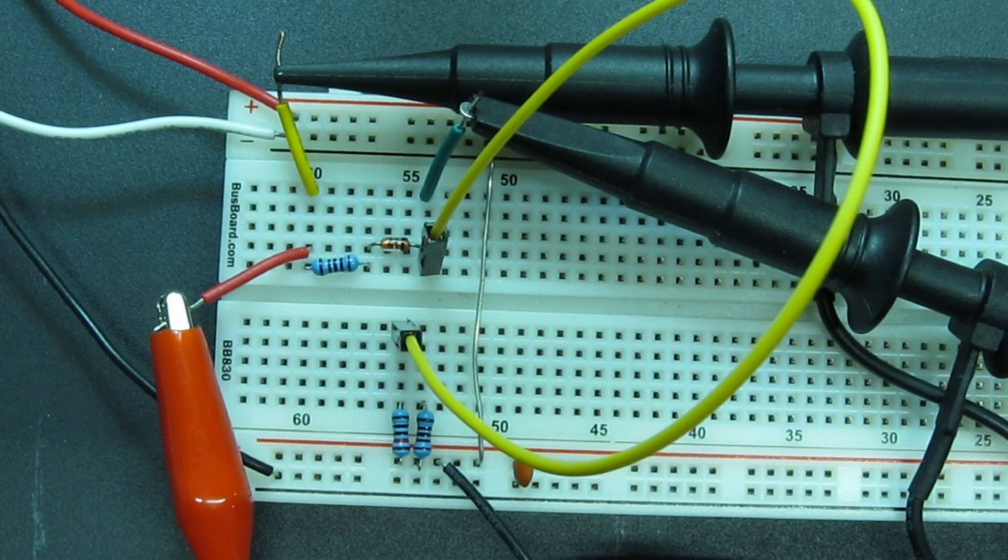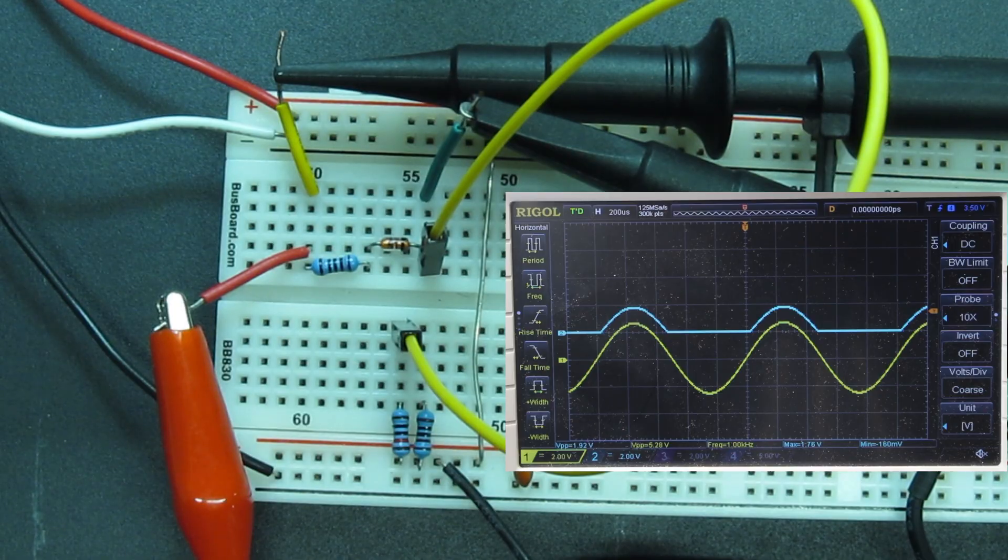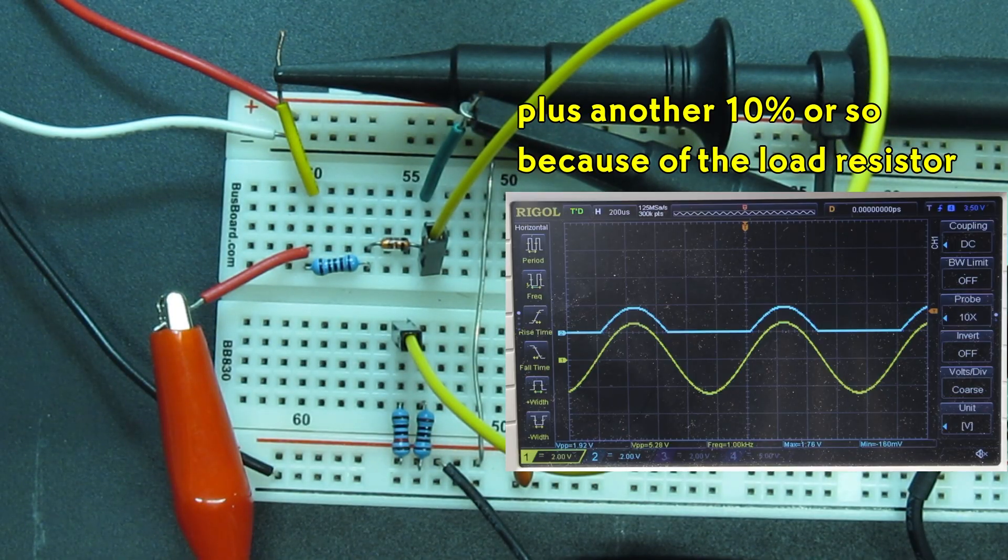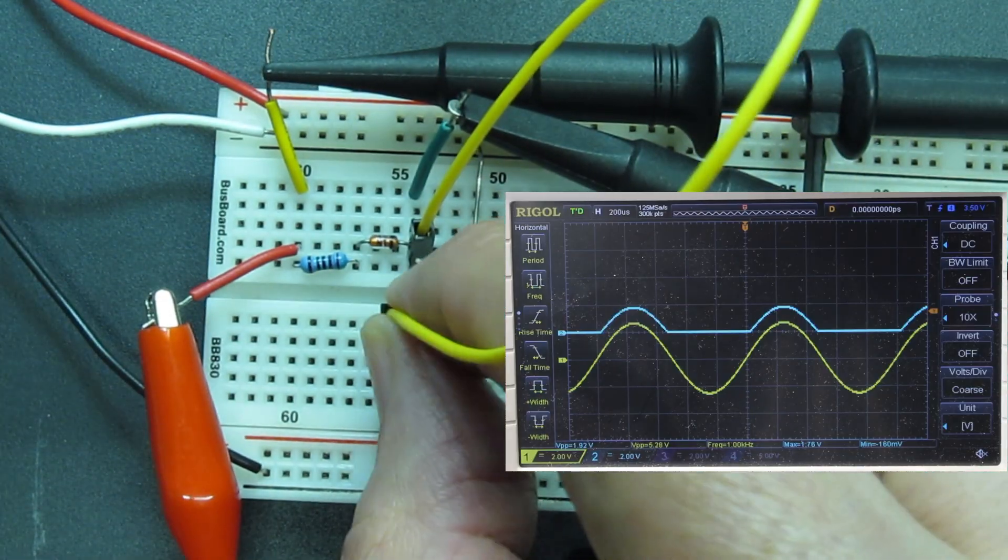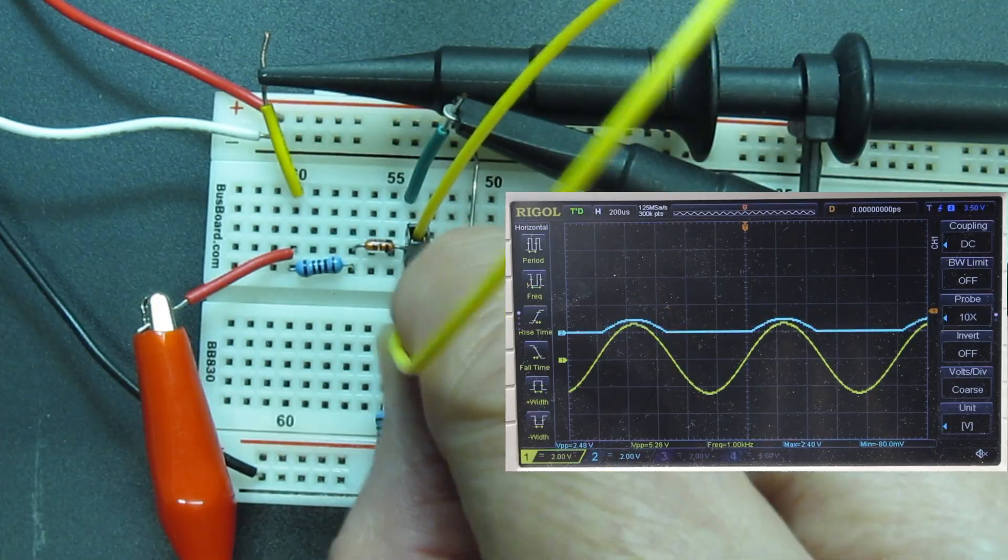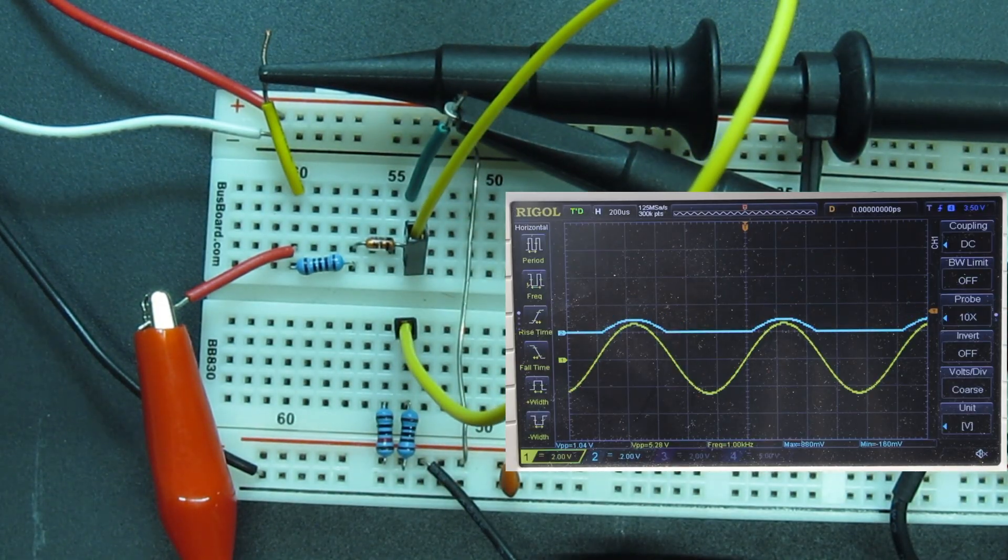There are scope probes monitoring the input and output. With the higher impedance source, I'm seeing the signal follow the input with about one diode drop of loss. But when I switch to a 1K load, we lose half the remaining signal.